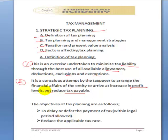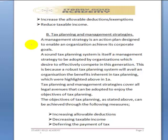Now let's look at the objectives of tax planning. All of our effort in tax planning is summed up in one sentence: to maximize our profit and reduce our tax liability. The first objective is to delay or defer the payment of tax within the legal period allowed. The second is to reduce the applicable tax rates. The third is to increase the allowable deductions and exemptions. While the fourth is to reduce taxable income.